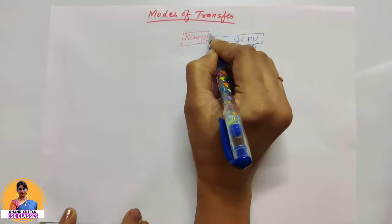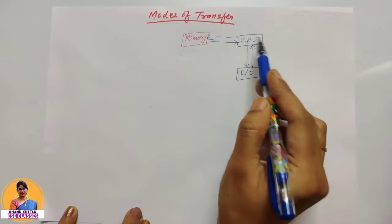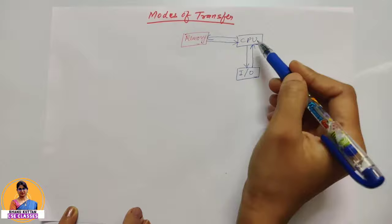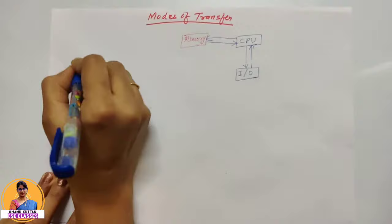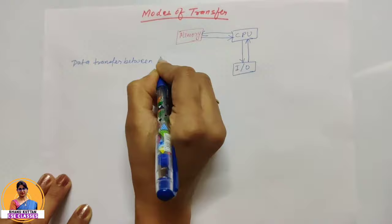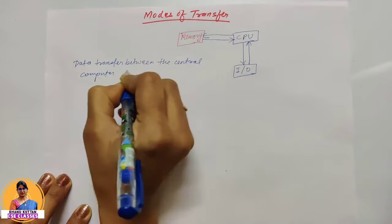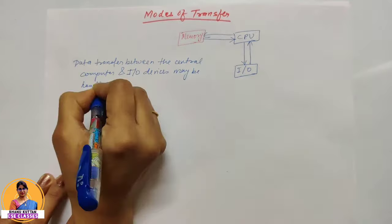In this case, the CPU we are seeing here works as an intermediate if we are working with I/O data transfer. But these are different methods of data transfer. That's why we can say data transfer between the central computer and I/O devices may be handled in variety of modes.